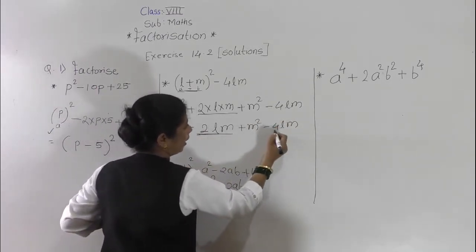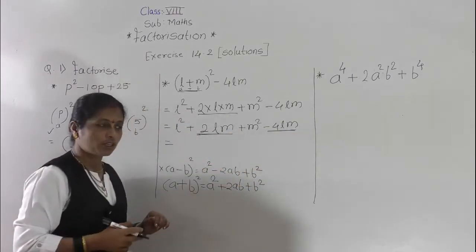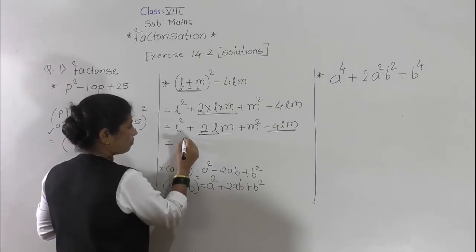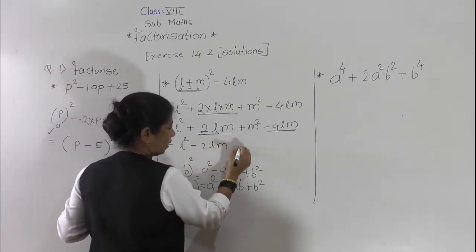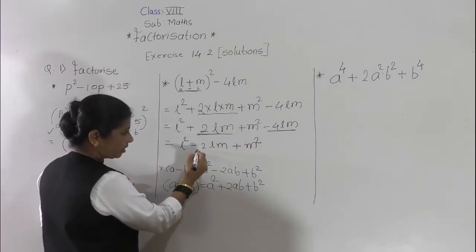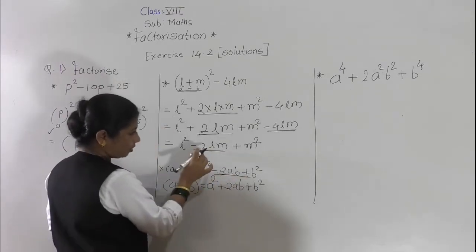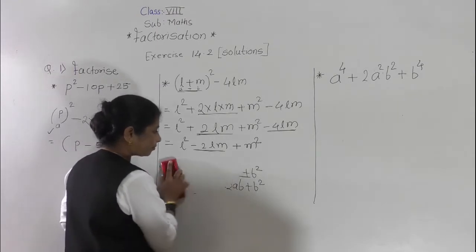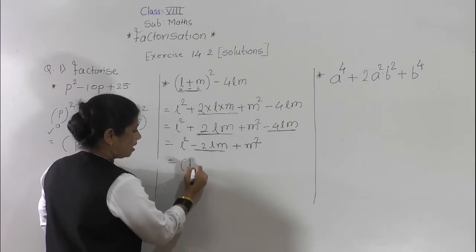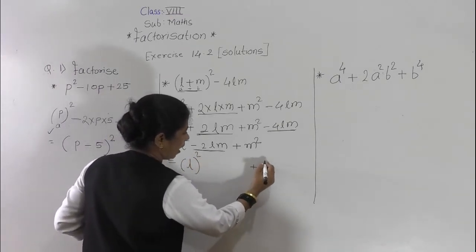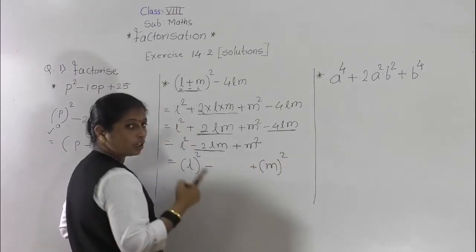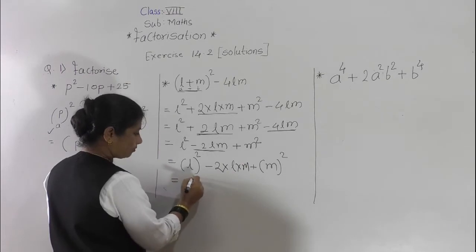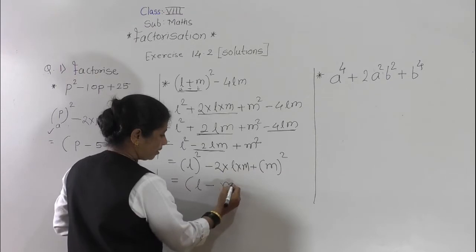Now here, this 2lm and this 4lm — one is positive, one is negative — so subtraction: 4lm minus 2lm gives 2lm, but it is negative. So we get l squared minus 2lm plus m squared. The middle term is negative, so we get the (a minus b) bracket squared form. Here l squared is l squared, and m squared is m squared. Middle term minus 2ab means 2 into l into m, so the factors are (l minus m) bracket squared. This is the actual factorization.